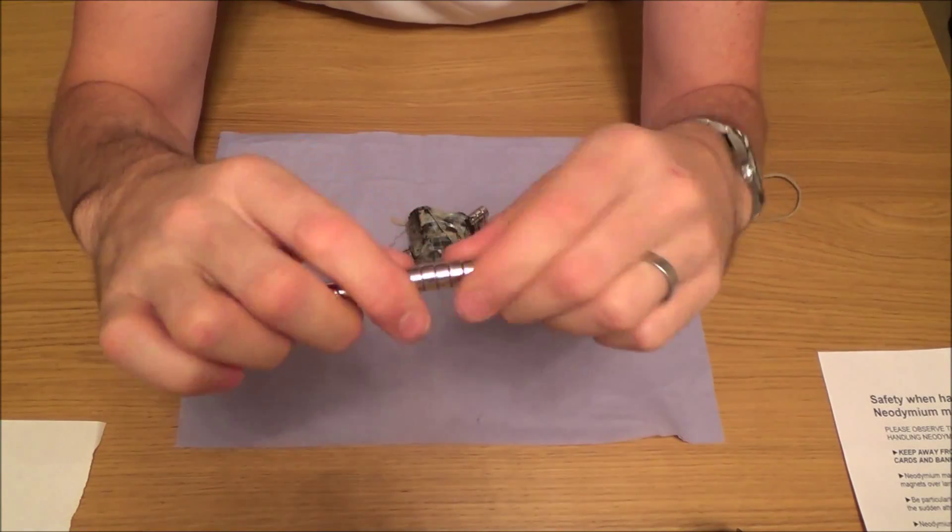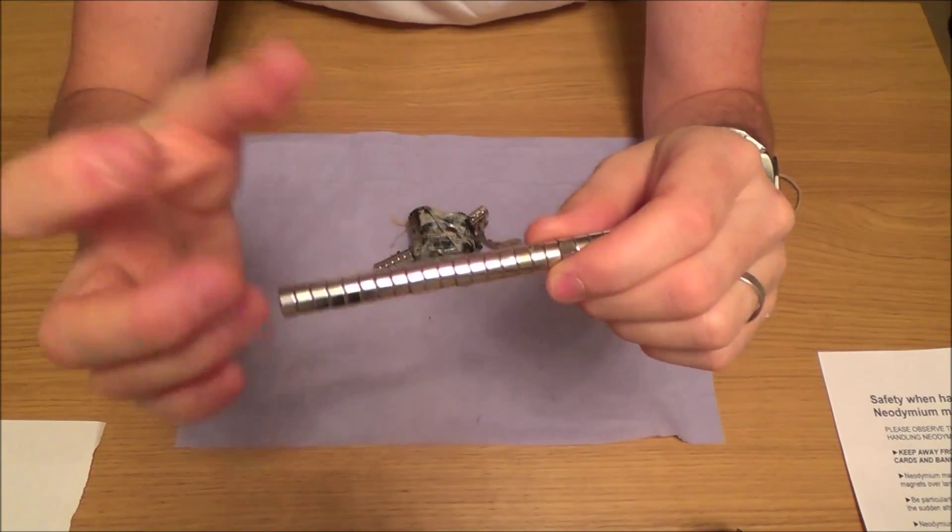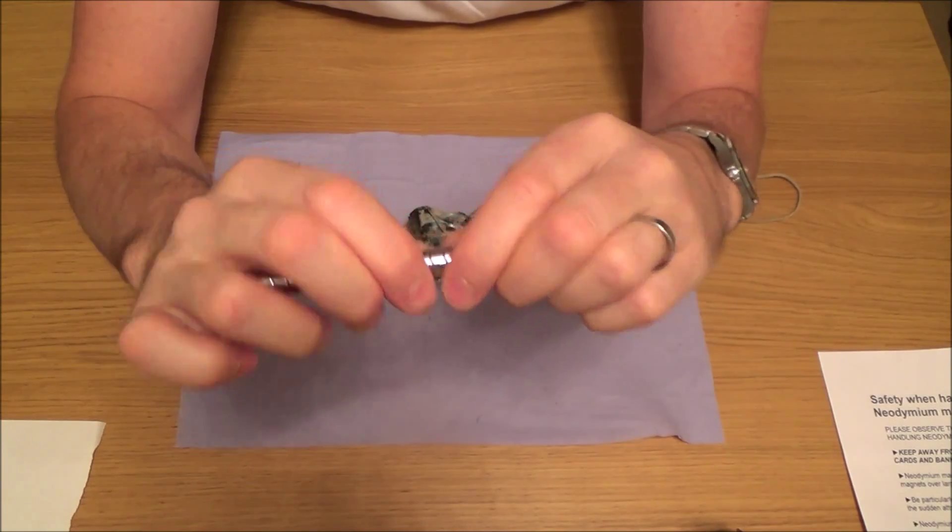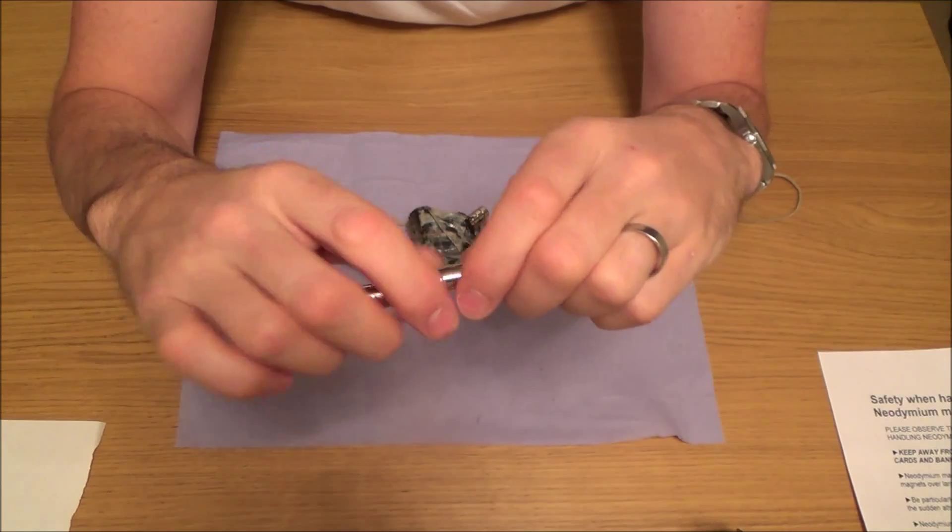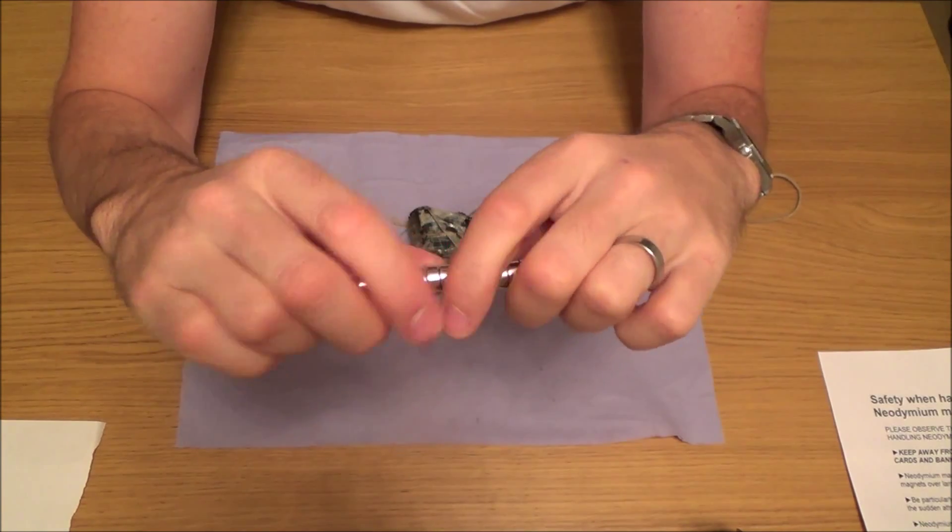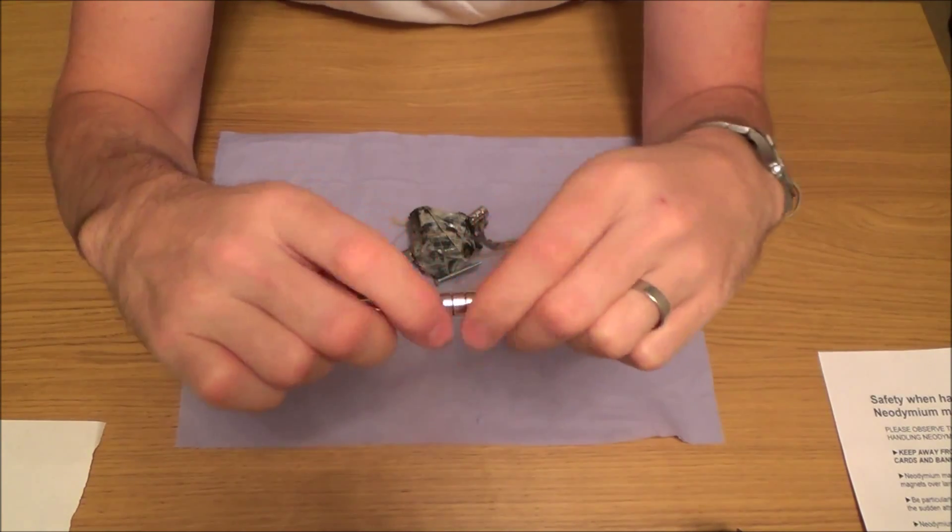What we did earlier is I attached a big neodymium magnet onto a bit of string and I dragged it through the river. I had my nephew and niece and my brother around and my kids as well, so we just thought we'd have a bit of fun and went magnet fishing.